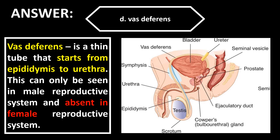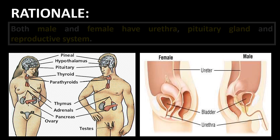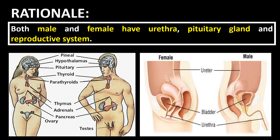The correct answer is letter D, Vas deferens. Vas deferens is a thin tube that starts from the epididymis to the urethra. This can only be seen in the male reproductive system and is absent in the female reproductive system. Both male and female have a urethra, pituitary gland, and reproductive system.